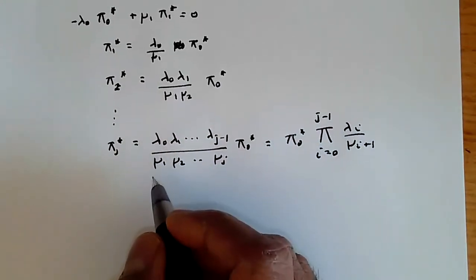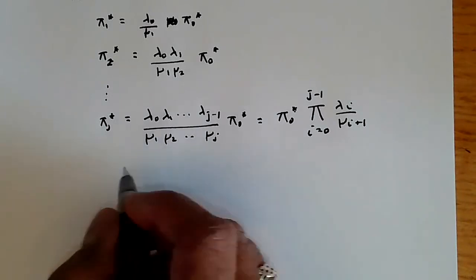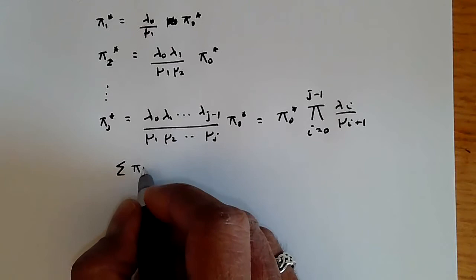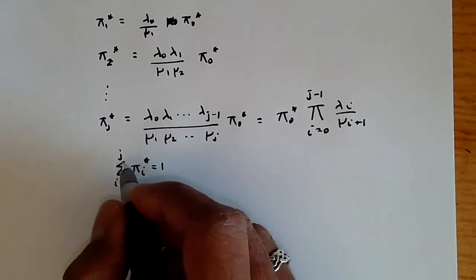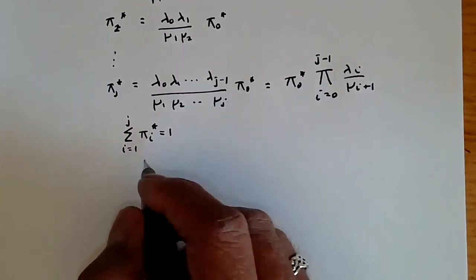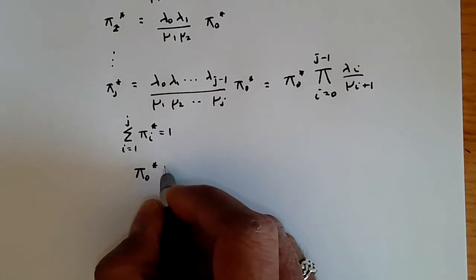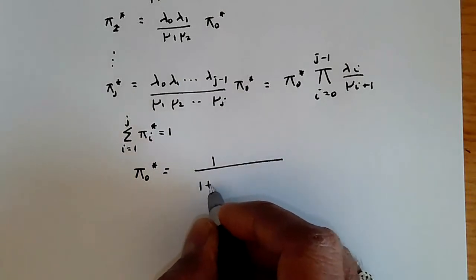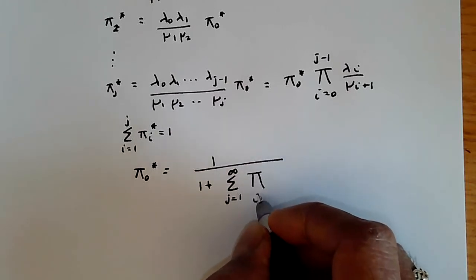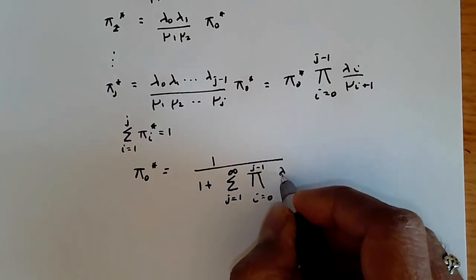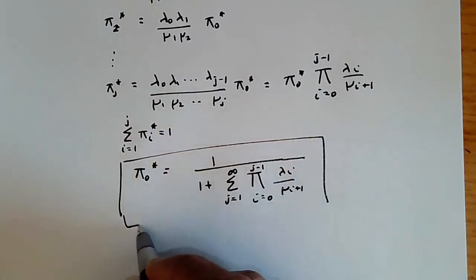But of course, everything is expressed in terms of π₀*. So how do we find π₀* in the first place? Well, we know that these probabilities all sum to one. So Σπᵢ* = 1, i = 0 to j. We're going to look at all the states. Therefore we can write down π₀* is given by 1 over 1 + Σⱼ₌₁ to ∞ of the product i=0 to j-1 of λᵢ/μᵢ₊₁.